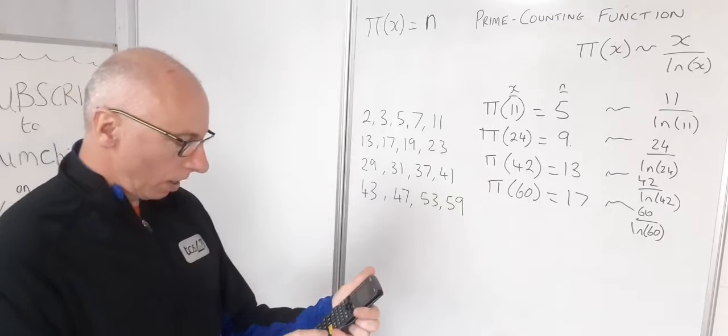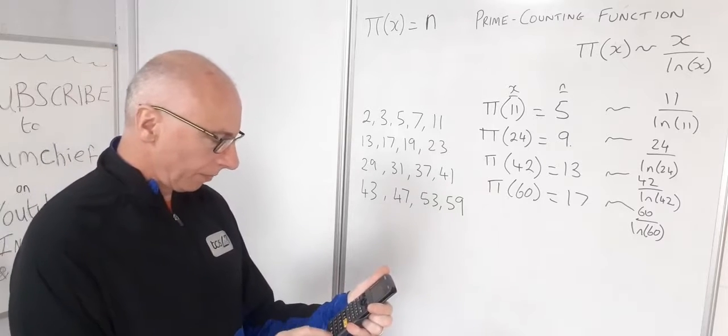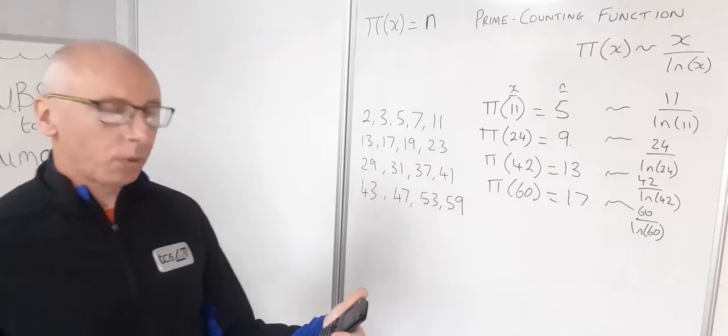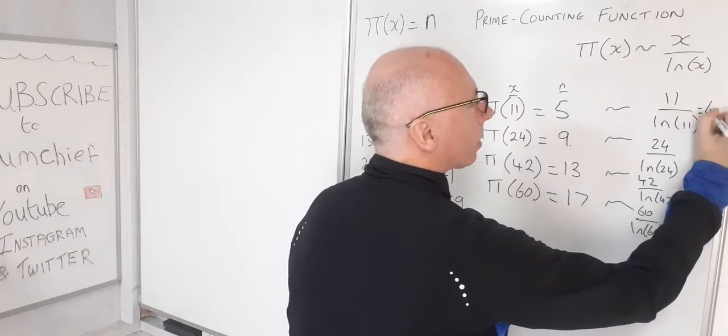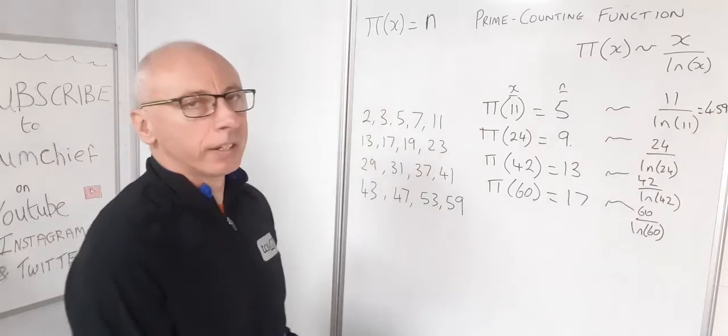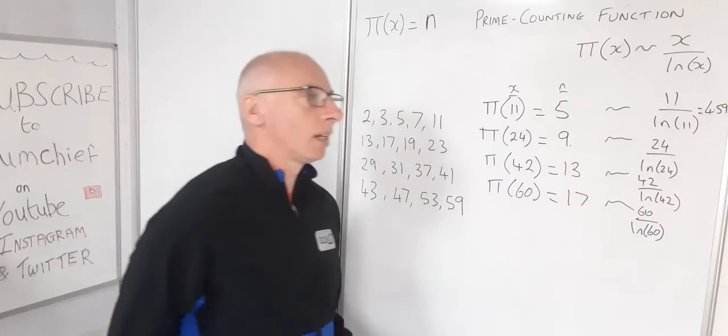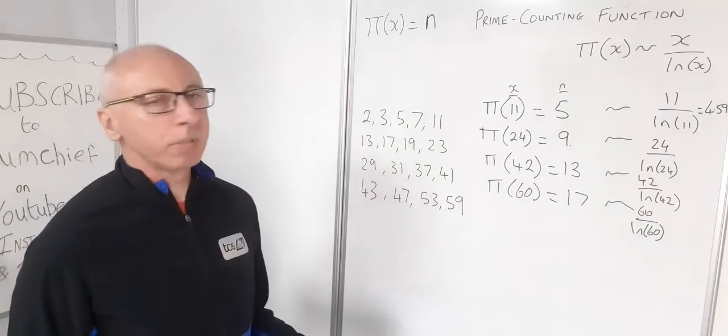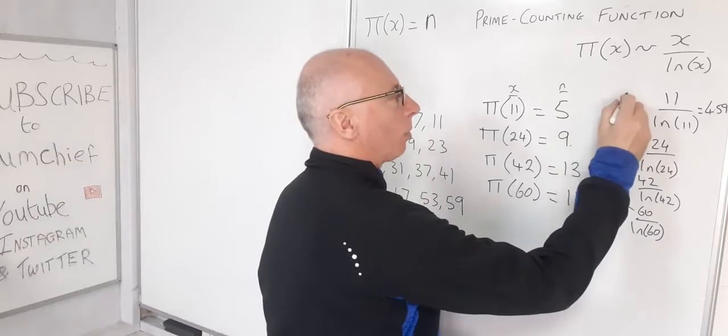11 over the natural log of 11 gives me 4.59. So this function gives me 4.59. I've got 5 here, so it's pretty much within 10 percent.